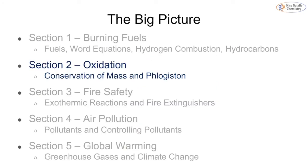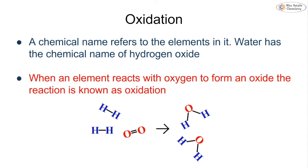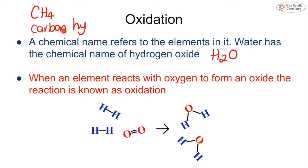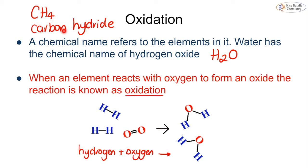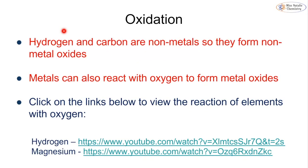Moving to oxidation: a chemical name refers to the elements in the substance — for example, water has the chemical name hydrogen oxide because it contains hydrogen and oxygen. CH₄ would be carbon hydride because it contains carbon and hydrogen. When an element reacts with oxygen and forms an oxide, we call this oxidation. So when hydrogen reacts with oxygen it undergoes oxidation and forms hydrogen oxide. Hydrogen and carbon are non-metals, so they form non-metal oxides; metals react to form metal oxides.